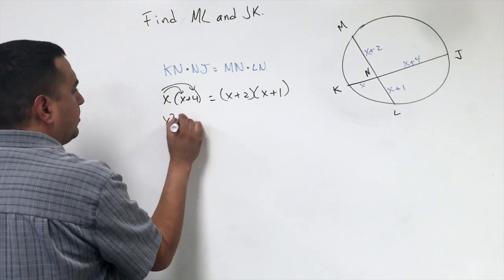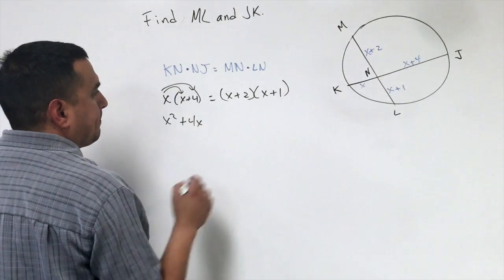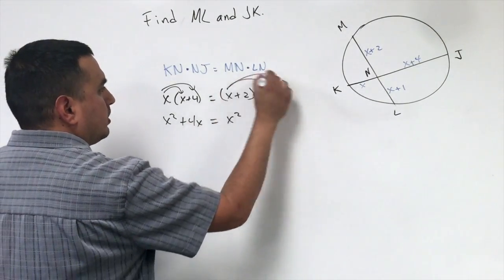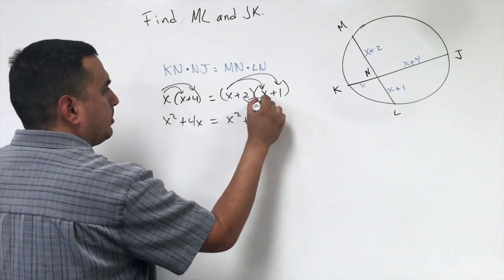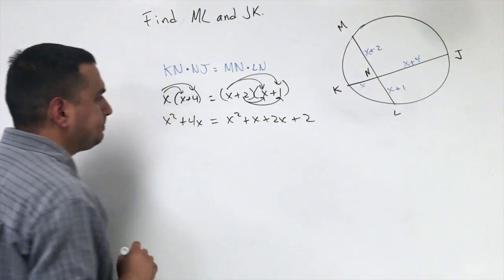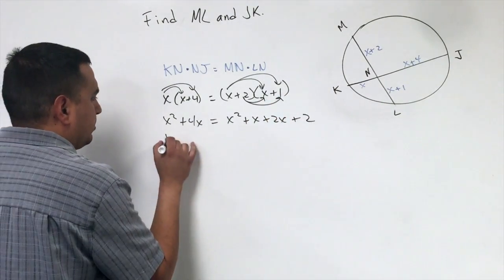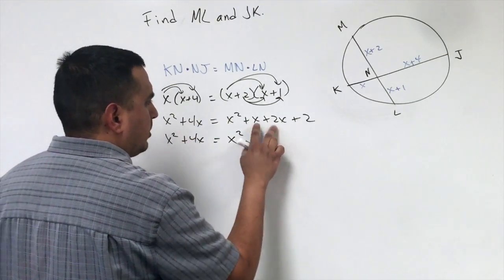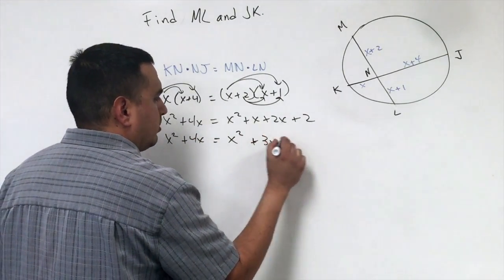We're going to get x squared plus 4x. Then we have to distribute here. So that would be x squared, 1 times x would just be x, 2 times x would be 2x, and then 2 times 1 would be 2. Now I've got to combine like terms. I've got x squared plus 4x on this side. This becomes x squared plus 3x plus 2.